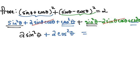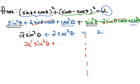We are trying to prove that this is equal to 2, so we're trying to make the left side equal to the right side. On the left we can factor out a 2, and that will give us sine squared plus cosine squared.